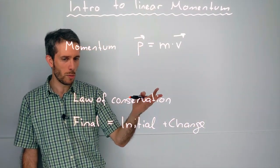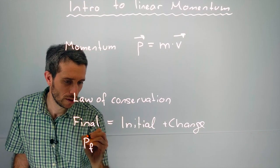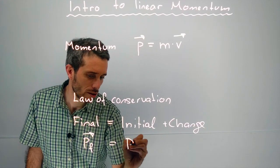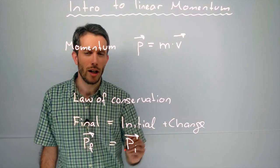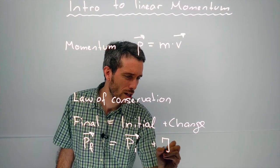Now, in the case of linear momentum, what you have at the end is your final momentum. What you had at the beginning is your initial momentum. And the change is through this thing that we call impulse.